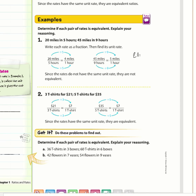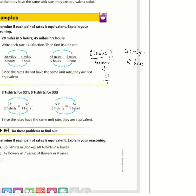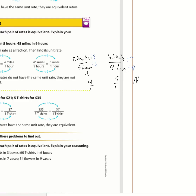We have 20 miles in 5 hours and 45 miles in 9 hours. If you simplify: divide by 5 and divide by 5, we get 4 over 1. For the other, divide by 9 and divide by 9, we get 5 over 1. So no, they are not equivalent — the unit rates are different.